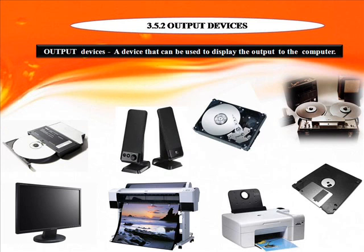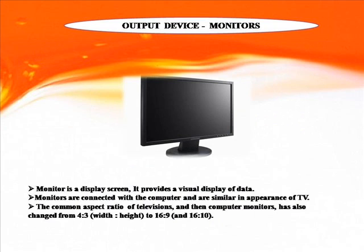Output Devices: Output devices are used to display the output of the computer. Monitor: A monitor is a display screen that provides a visual data display. Monitors are connected with the computer and are similar in appearance to a TV. The common aspect ratio has changed from 4:3 (width 4, height 3) to 16:9.